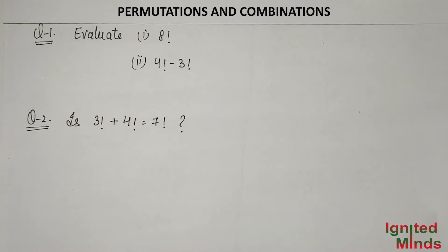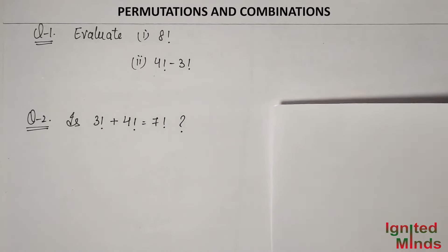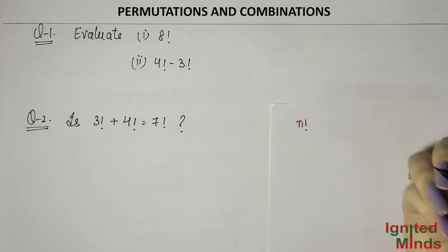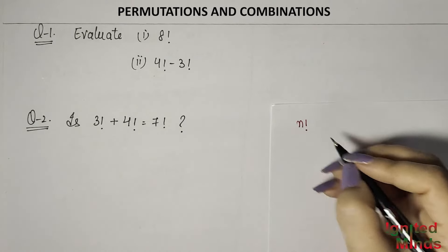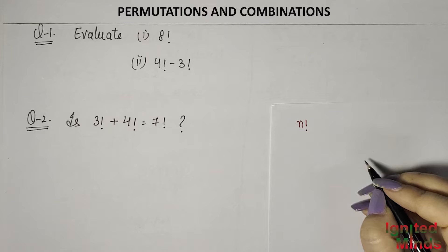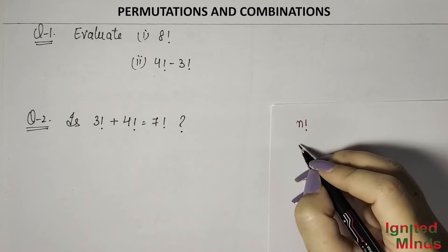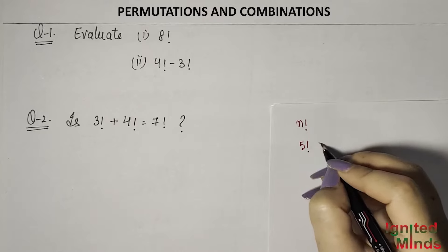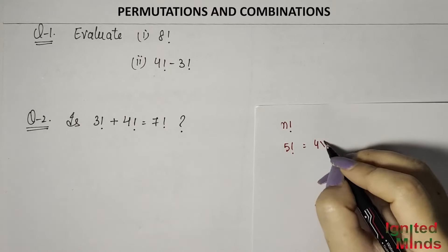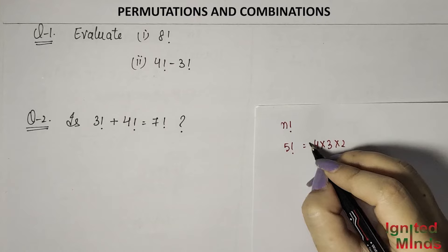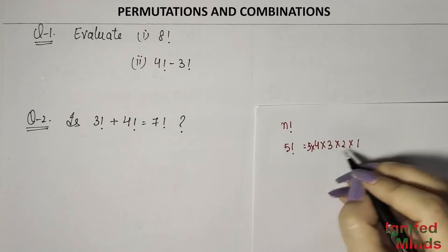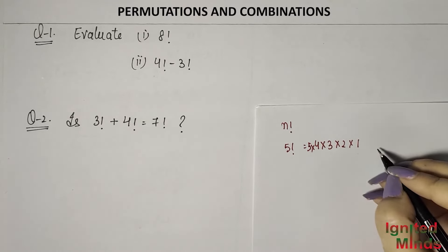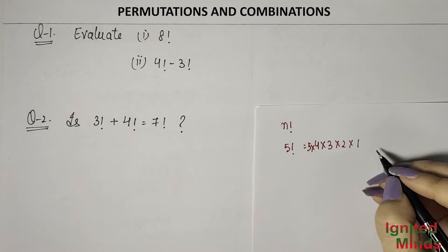I will tell you a simple method. What is a factorial? Factorial means the product of all natural numbers. So if I write 5 factorial, that means 5 × 4 × 3 × 2 × 1. We go down to 1, not 0, because factorial is always a product of natural numbers.